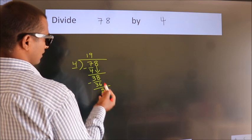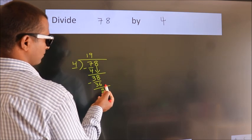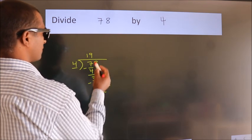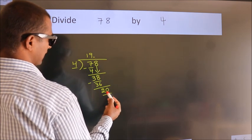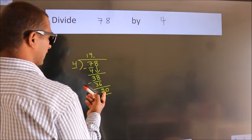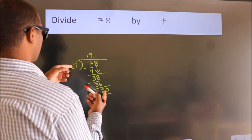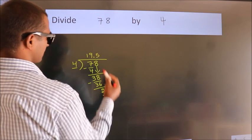After this, no more numbers to bring down. So what we do is put a dot and take 0. So, 20. When do we get 20 in the 4 table? 4 times 5 is 20.